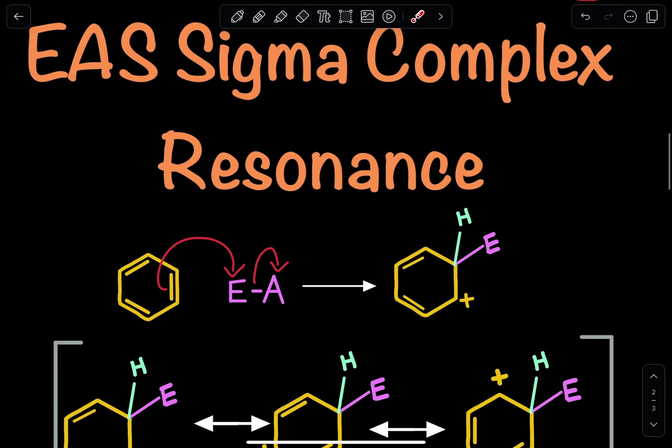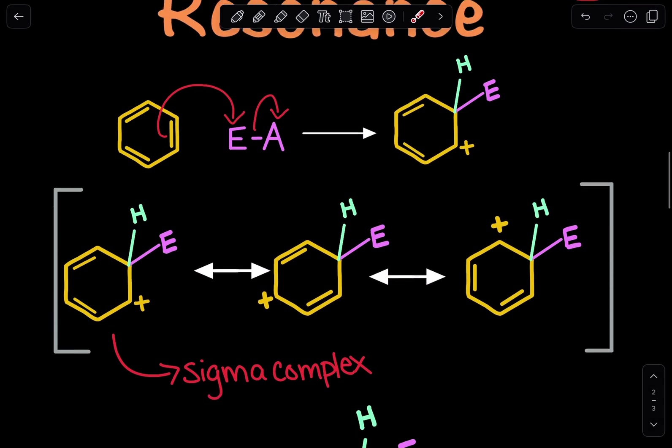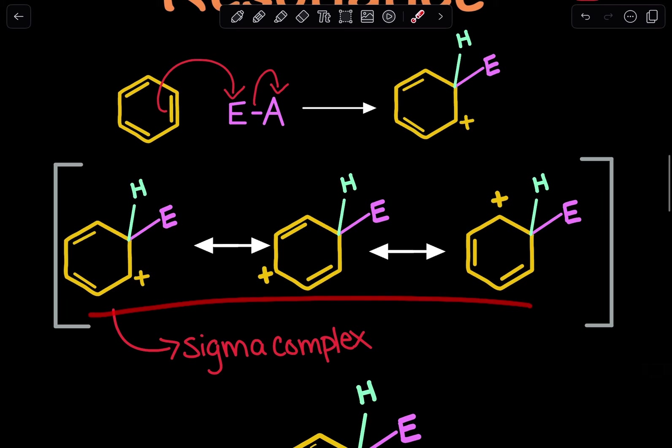So that is your EAS, your electrophilic aromatic substitution sigma complex resonance structures. We have to be able to draw these resonance structures. And this is the general structure. Instead of drawing the E for the electrophilic molecule, you're actually going to have a molecule over here and that could be bromine or it could be chlorine. Make note of that.